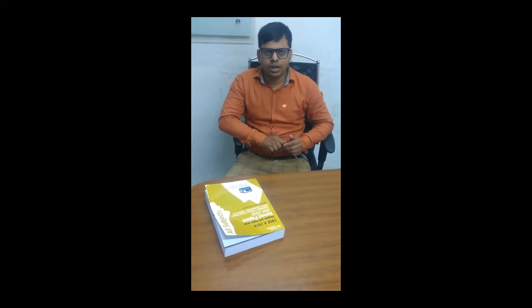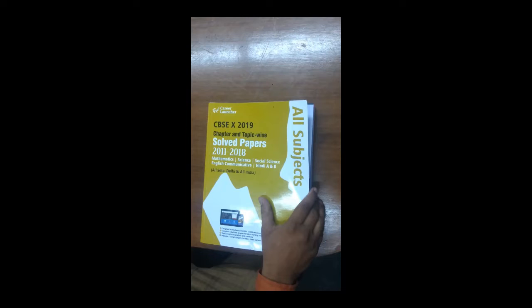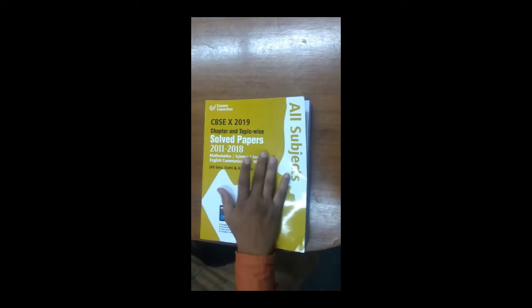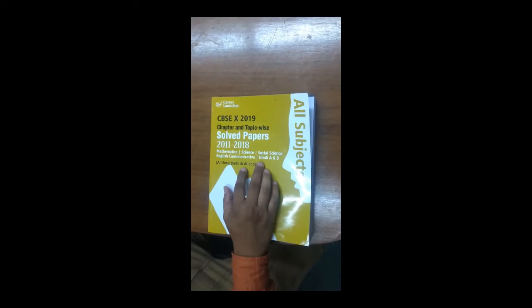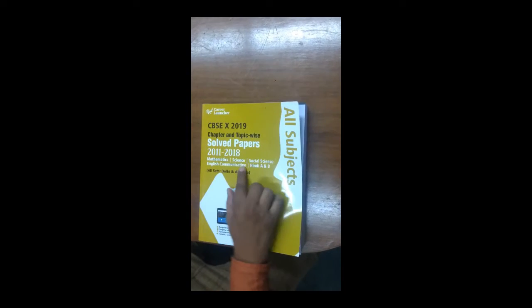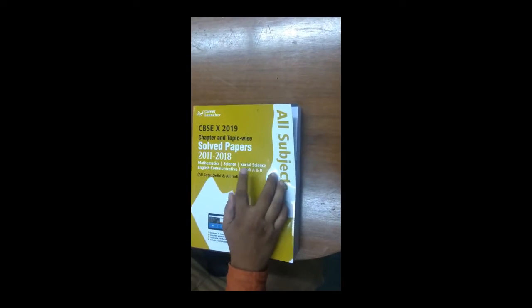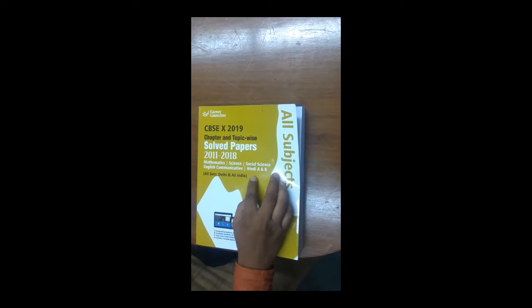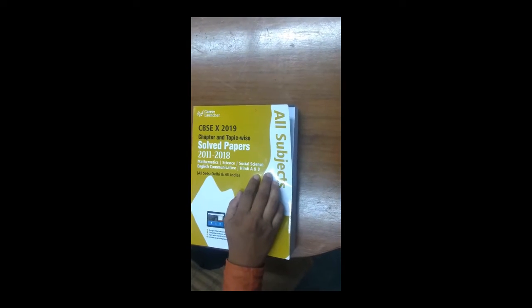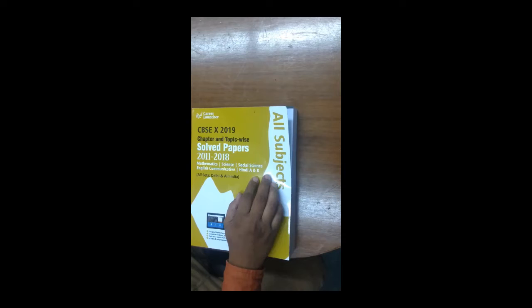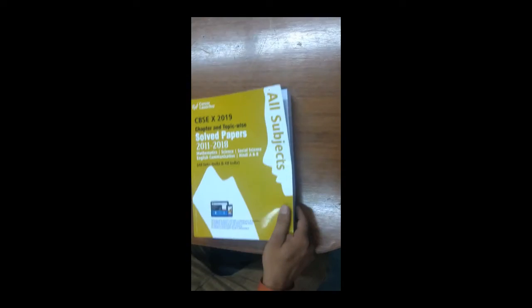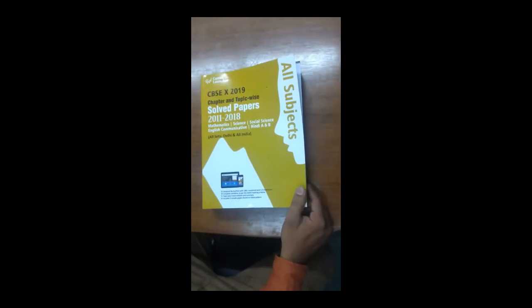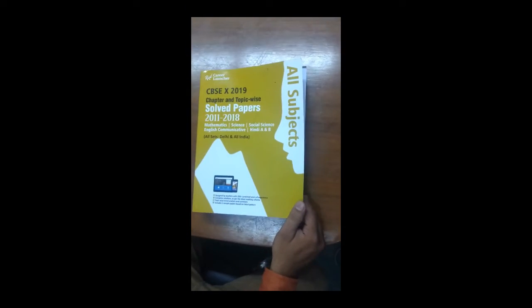Now we will talk about some features of this book. This book is a common source that covers all the subjects — that is Mathematics, Science, Social Science, English Communicative, and Hindi A and Hindi B. I would like to share the key features of this book and why it would be an inevitable tool for students dreaming to clear the board exam with flying colors.